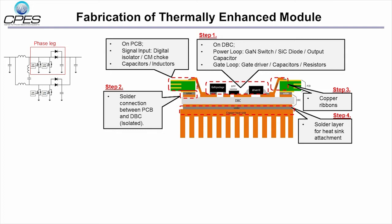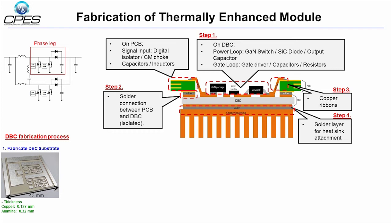On PCB side, the signal inputs and other passive components were placed. Now let's look at the step-by-step DBC fabrication process. First, DBC substrate was made by wet chemical etching process and laser powder. The surface was coated by silver to prevent surface oxidation.